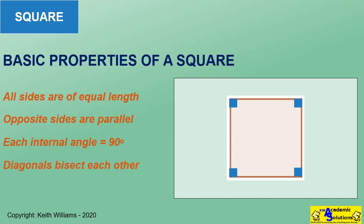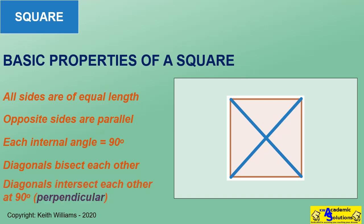The diagonals of a square bisect one another. The diagonals of a square are also perpendicular — in other words, they cut each other at an angle of 90 degrees.